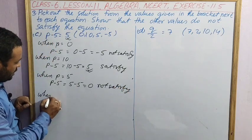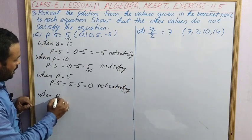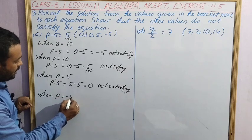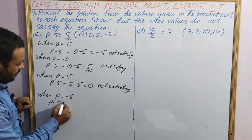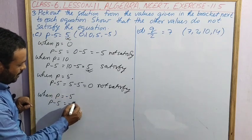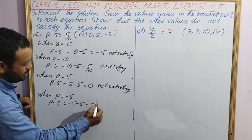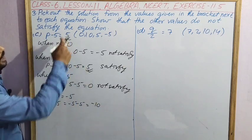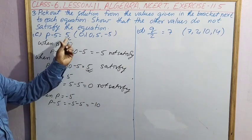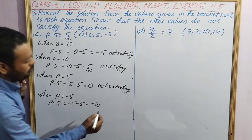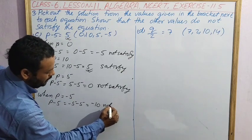Last value: when p equal to minus 5, p minus 5, that is minus 5 minus 5, which can be minus 10. Left hand side is minus 10, right hand side is 5. So this one is also not equal, not satisfy. The correct answer for question C is p equal to 10.